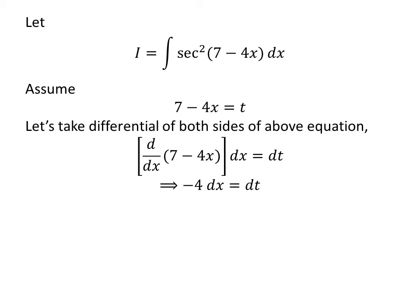As we know, derivative of 7 minus 4 times x with respect to x is equal to minus 4. So we are left with minus 4 times differential of x is equal to differential of t.